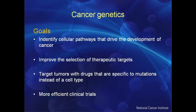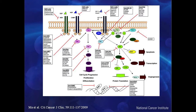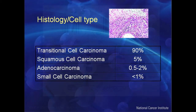The goal of understanding cancer genetics is to identify cellular pathways that drive the development of cancer and improve the selection of therapeutic targets. We hope to use drugs that actually target mutations instead of just cell types, and therefore run more efficient clinical trials. We know many pathways and proteins are activated in cancer, and we now have drugs that can target these. However, we're still treating most tumors by cell type.